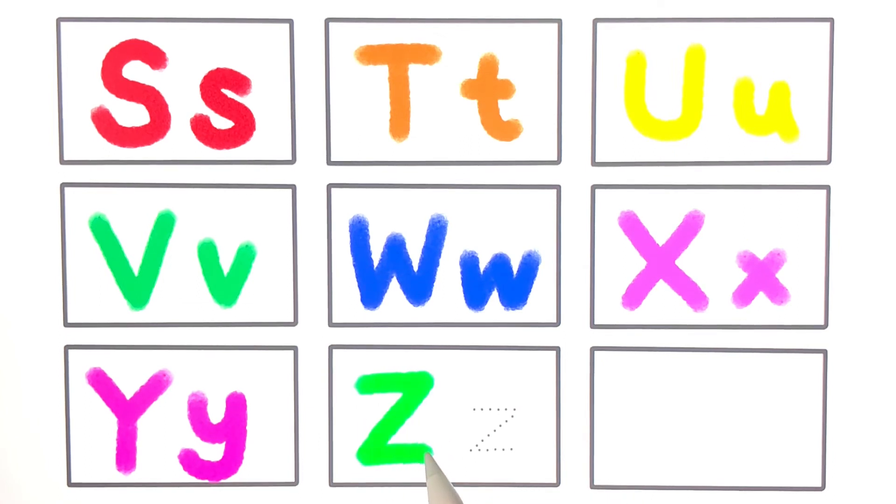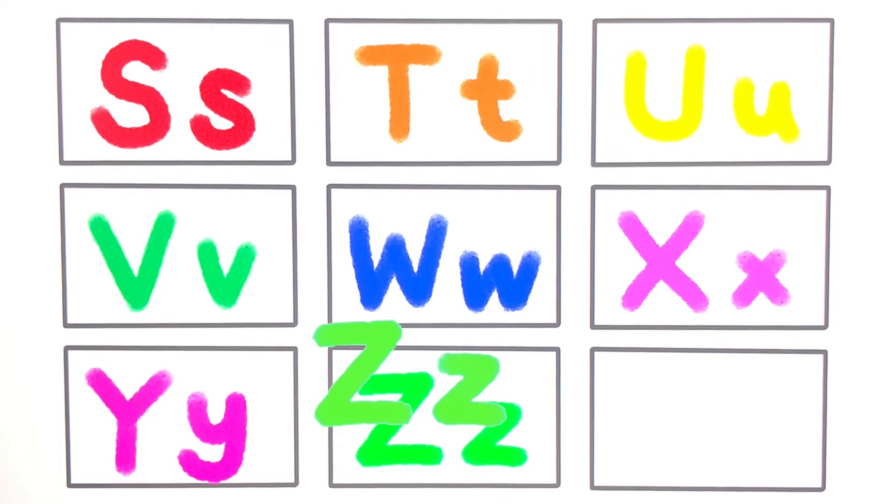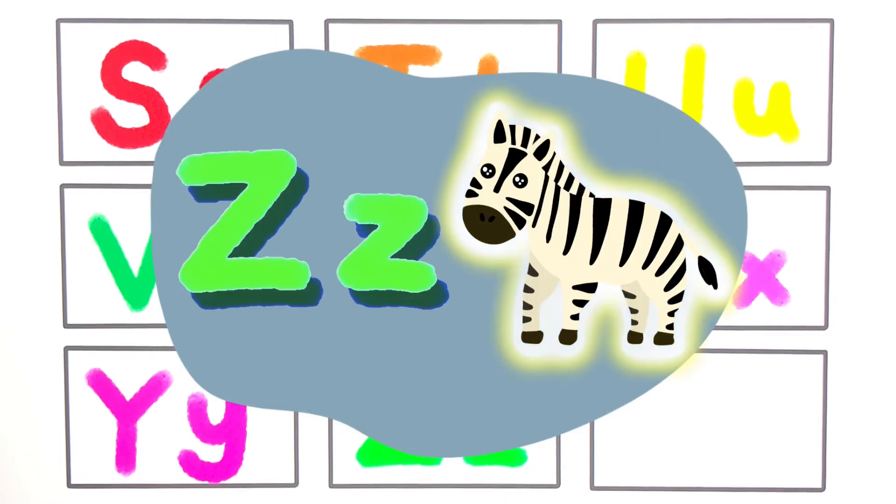A, B, C, D, E, F, G, H, I, J, K, L, M, N, O, P, Q, R, S, T, U, V. Z. Z for zebra.